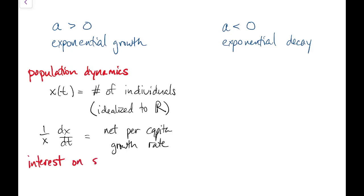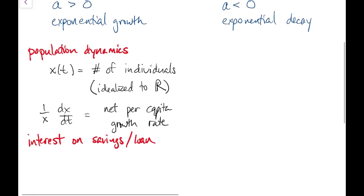Another example of exponential growth is the interest on a savings account or on a loan. In this case, the coefficient a represents the continuous compounding interest rate.